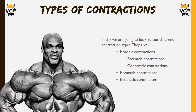We're going to be looking at four different contraction types but three main categories of contractions. The main categories are isotonic contractions, isometric contractions, and isokinetic contractions. Isotonic is then split up into two different categories: eccentric contractions and concentric contractions. The following slides will discuss these in detail so we're able to compare and contrast the different characteristics of each contraction type.